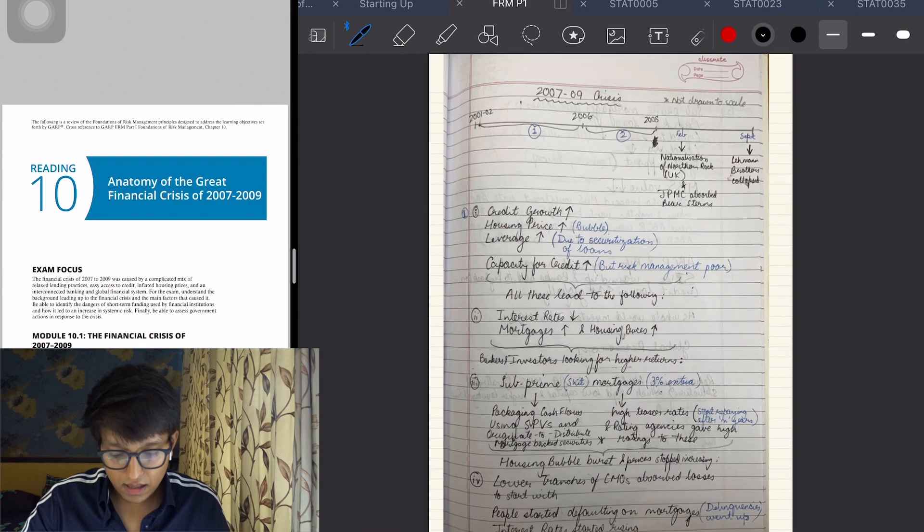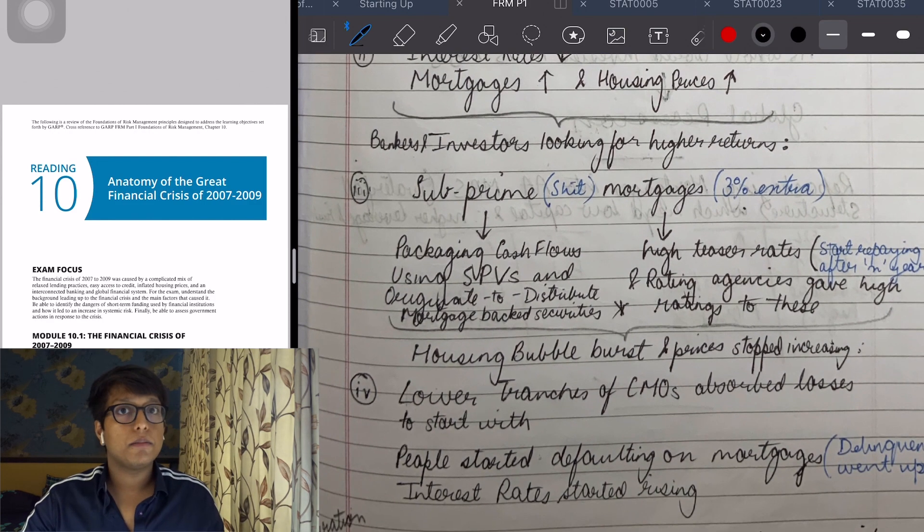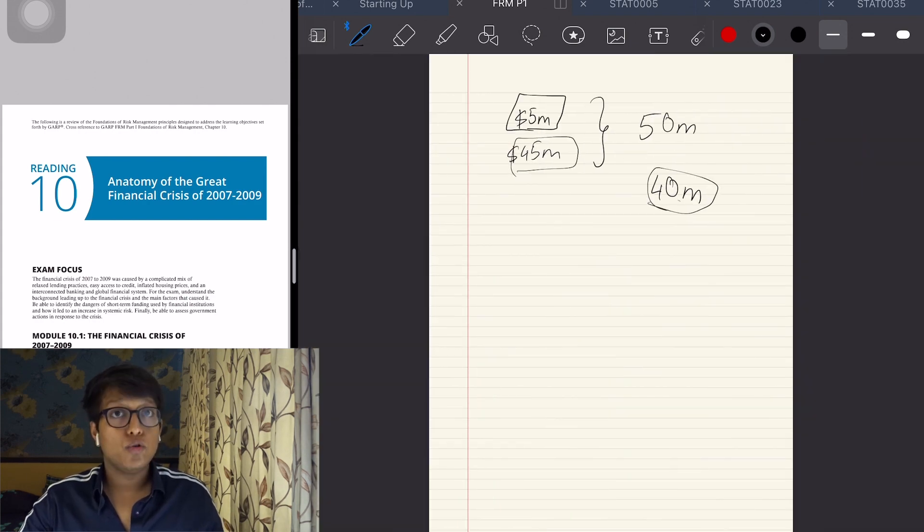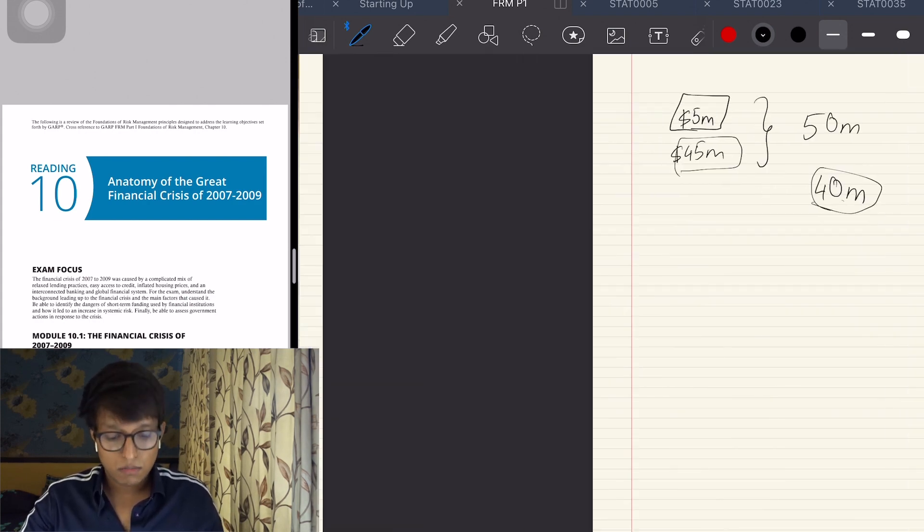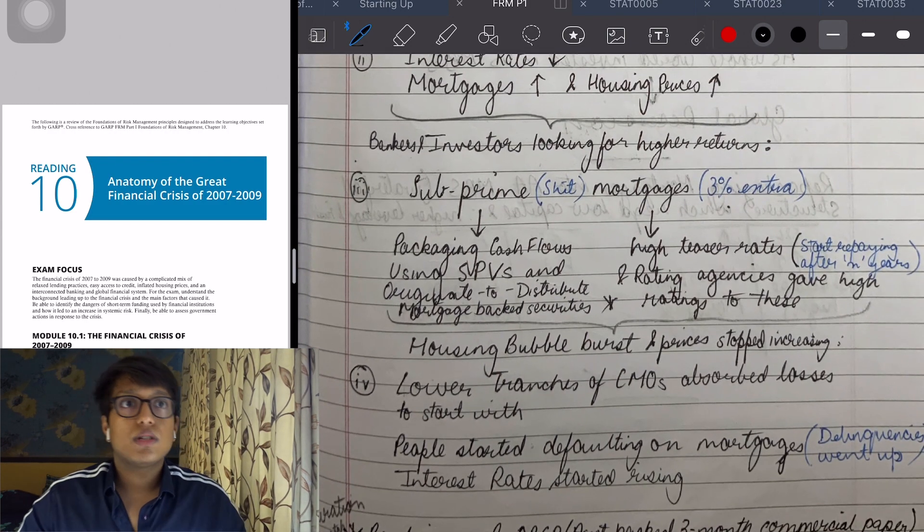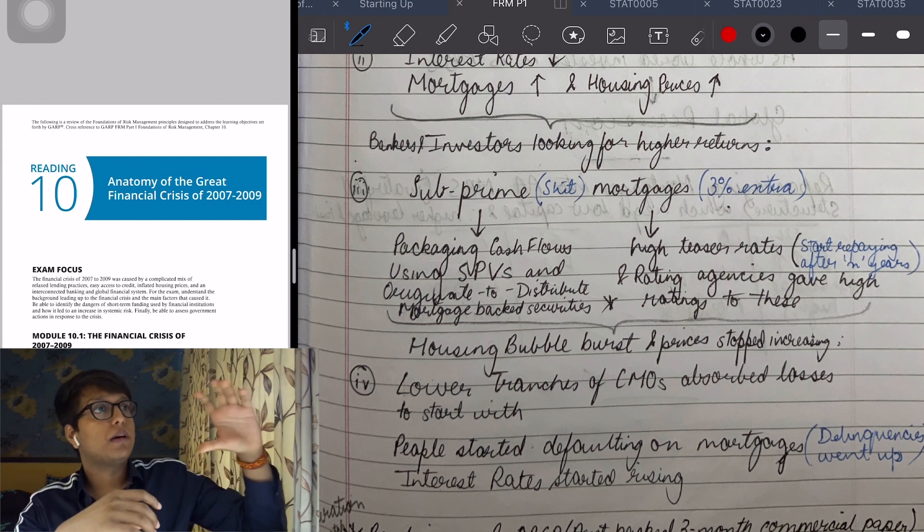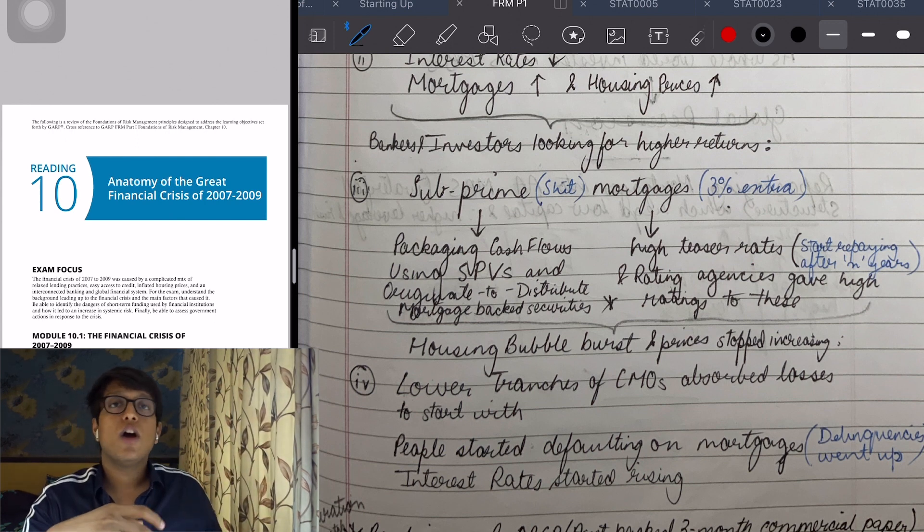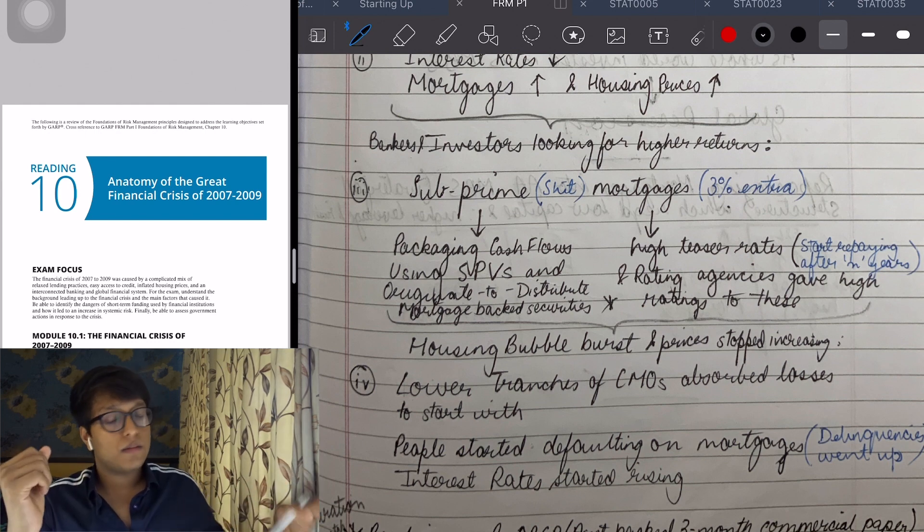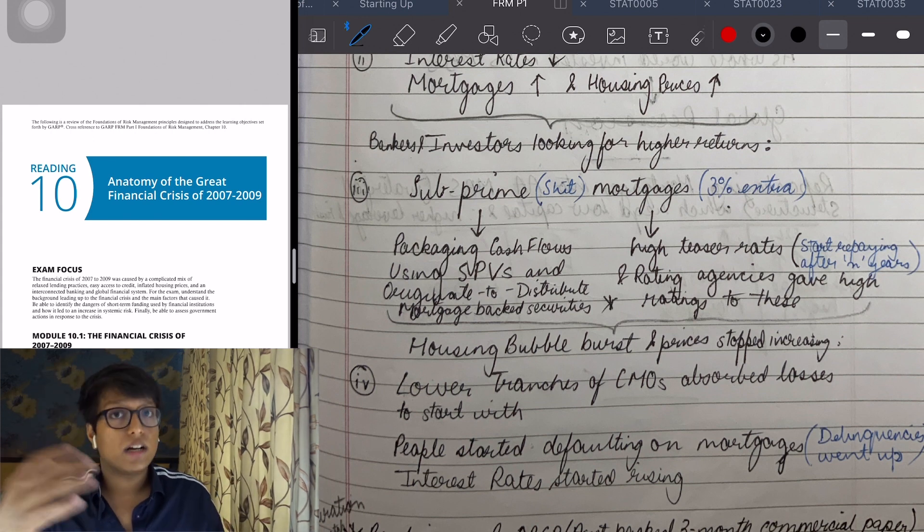In the last phase towards 2006, the bubble started bursting and prices started falling because people started defaulting in huge numbers. The lower tranches of the CDOs - even in one CDO some people earn three percent, some four percent, and some five percent. Obviously whoever is earning higher return will face the losses first. So these lower tranches absorbed the losses first, people started defaulting on mortgages, and interest rates started rising.